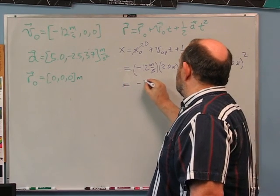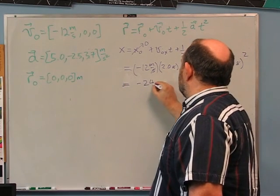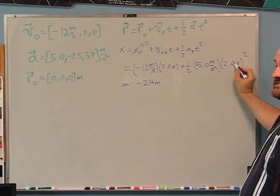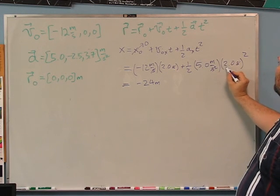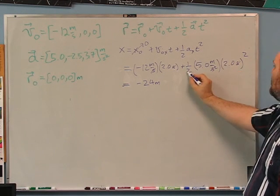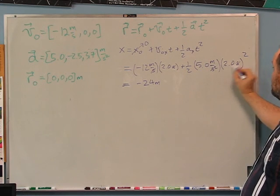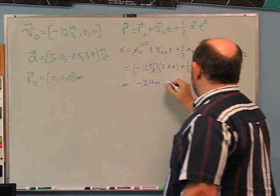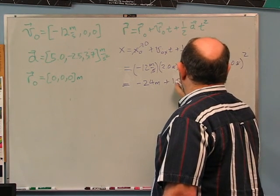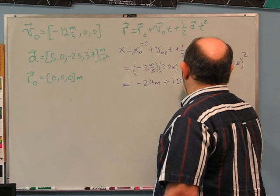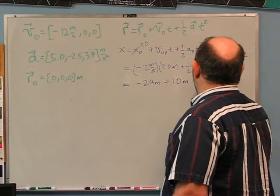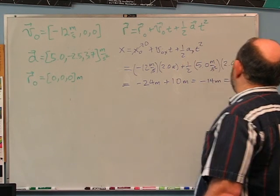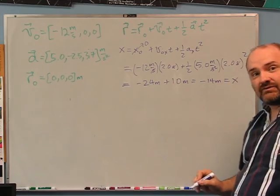12 times 2 is -24 meters. Then ½ times (2²) = ½ times 4 = 2, times 5.0 gives +10 meters. So x = -24 + 10 = -14 meters. That is x at t = 2 seconds.